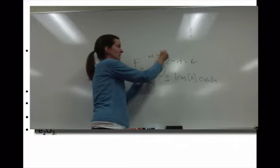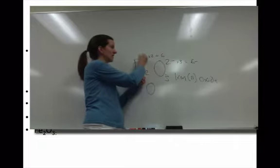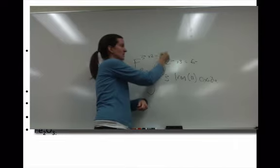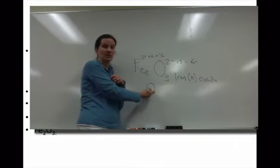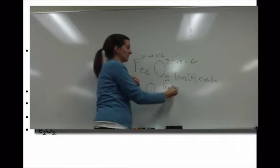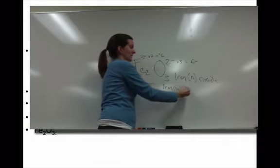Well, it's got to be plus 3 times by 2 to get me 6, so that the plus 6 and the minus 6 cancels to be 0. The name of this one, then, will be iron 3 oxide.